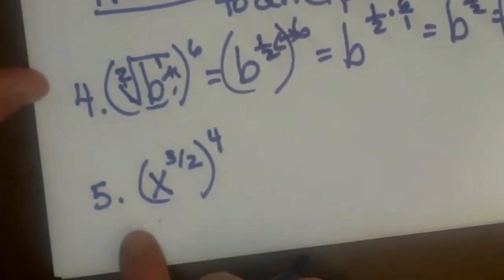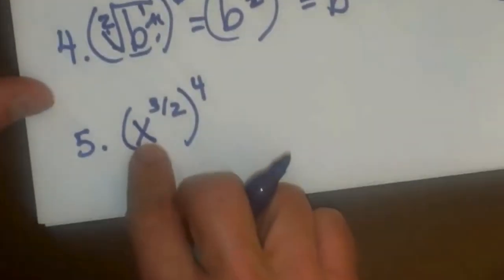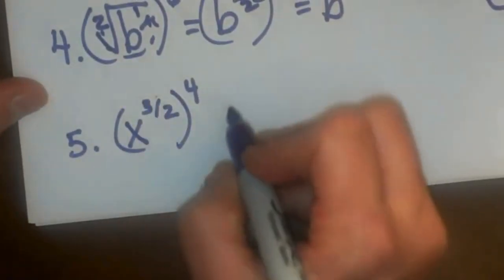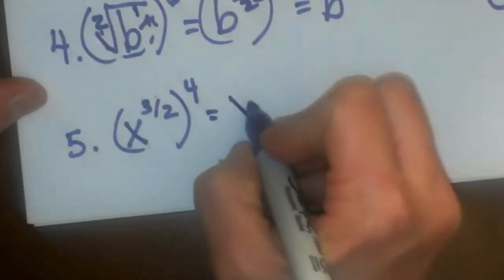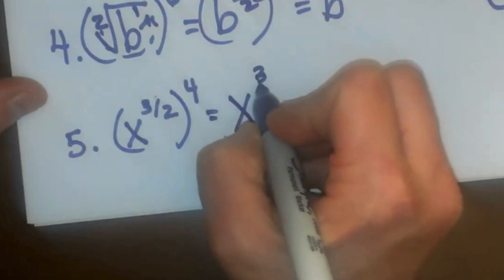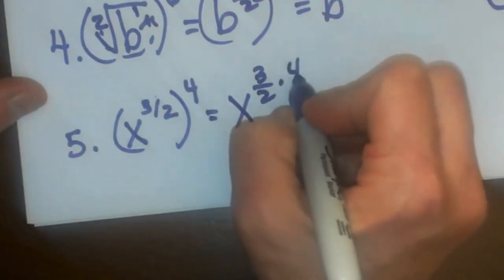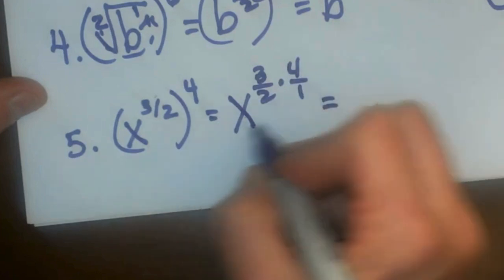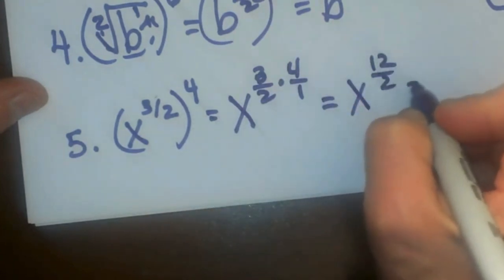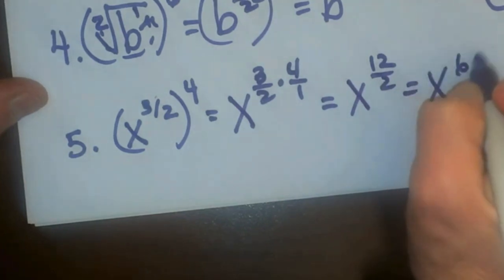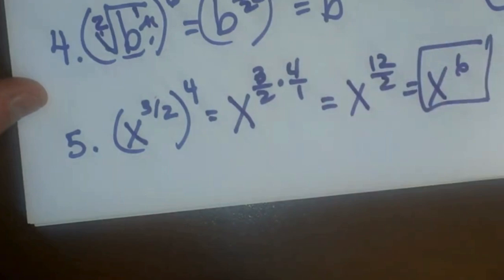Let's look at one more of these. This one is already switched and written as a rational exponent, so it is very simple. I just take x to the three halves times four over one, and that is going to give me x to the twelve halves, which is x to the sixth. And that is how you write that answer.